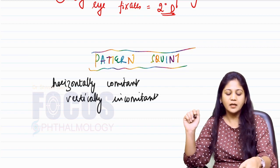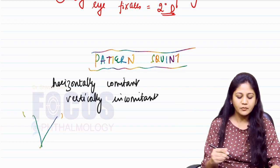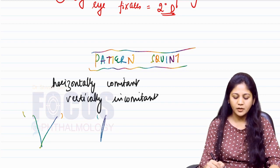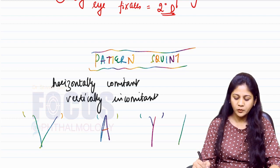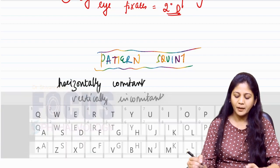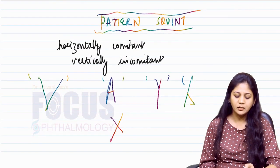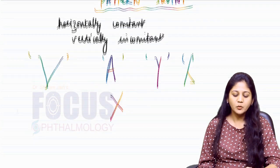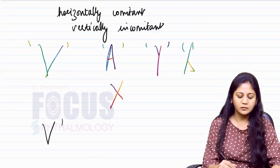For example, you can have a V pattern, an A pattern, a Y pattern, a lambda pattern, an X pattern, and so on. The most common pattern which is seen is the V pattern.